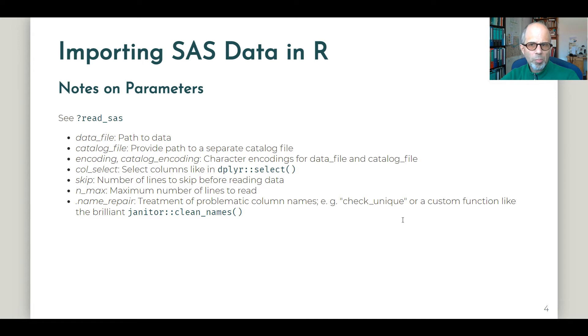A few notes about parameters. Most of these are also available for the other software packages. Specific for SAS is the catalog file parameter, so we can provide a path to a separate catalog file. There are also parameters to specify encodings, to select columns when reading in the data which is very convenient and saves time. We can skip lines of data, specify a maximum, and specify how to deal with problematic column names. There are predefined parameters like check unique, but we can also specify a custom function. The janitor package comes to mind with its powerful clean names function that you may want to try out on problematic variable names.